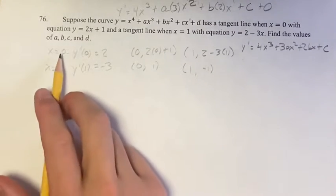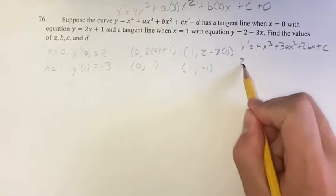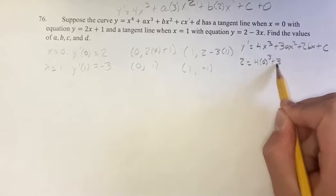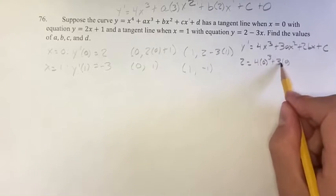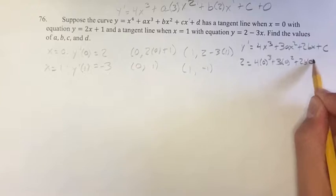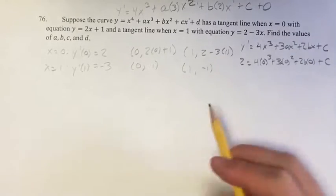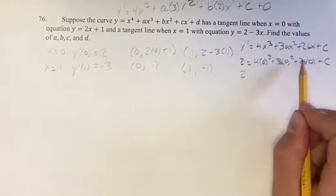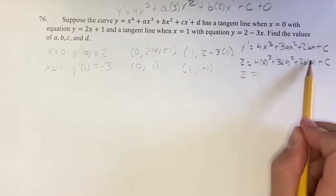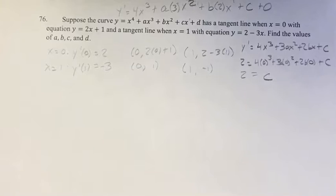When x is equal to 0, the derivative equals 2. So 2 equals 4 times 0 cubed plus 3a times 0 squared plus 2b times 0 plus c. Since all those terms have a factor of 0, they all go to 0, so this side is just c. Therefore c equals 2.